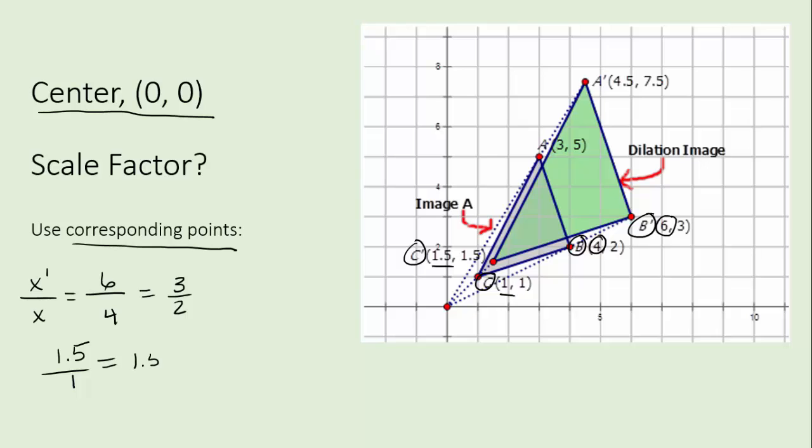Anything over 1 is just itself. So that's 1.5 which is the same as three halves. That's the same. And it'll be the same no matter what coordinates you pick. So you just put a corresponding X over X or Y over Y from any point in the figure. See how simple that is?